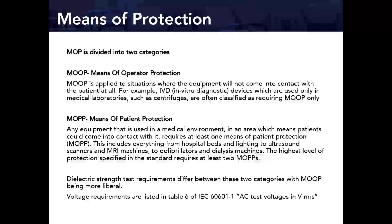When talking about IEC 60601-1, there are different types of hypot tests based on means of protection — or MOP. MOP is divided into two categories: MOOP (means of operator protection), applied to equipment that will not come into contact with the patient at all — such as centrifuges used in medical laboratories — and MOPP (means of patient protection), for any equipment used in a medical environment where patients could come into contact with it, such as hospital beds, lighting, ultrasounds, and MRI machines.